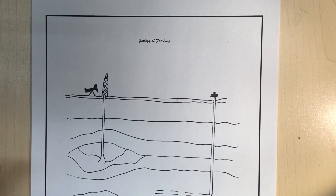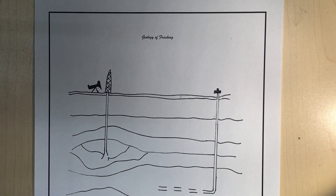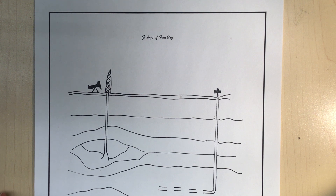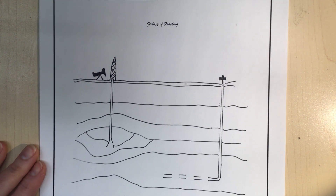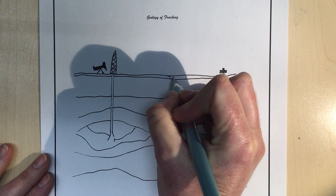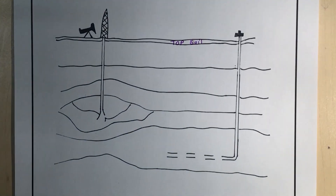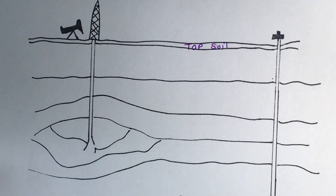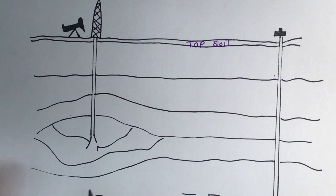Let's go through this diagram for the geology of fracking. Go ahead and fill in your diagram as I do the one on the video here. We have some layers under the earth and they're not to scale, just so you know. The top soil would be here — topsoil is a thin layer in most places compared to the next layers. These layers can be a lot deeper than what's showing here in this diagram.